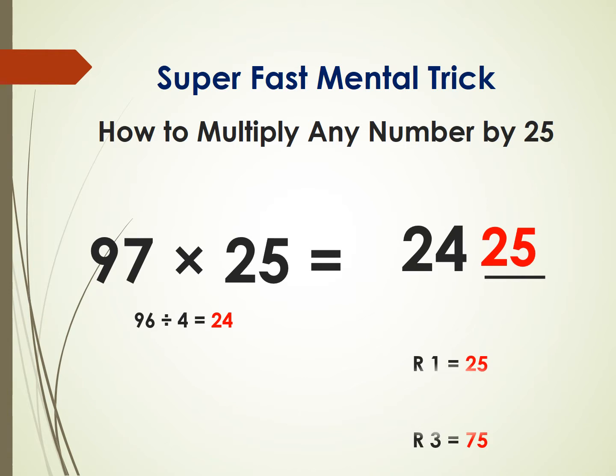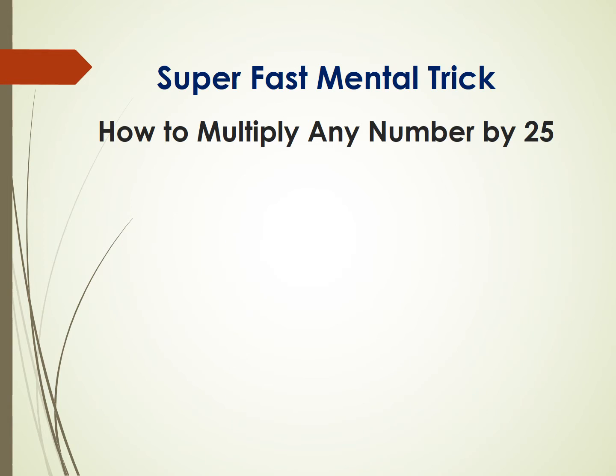If the remainder is 1, write 25. If the remainder is 2, write 50. And if the remainder is 3, write 75.